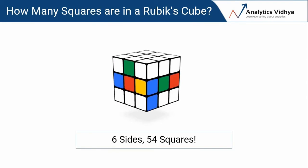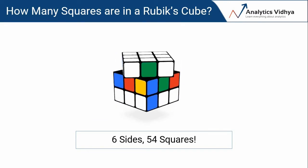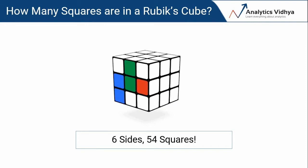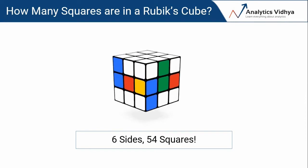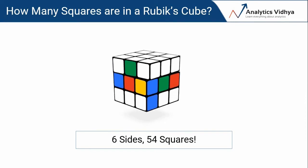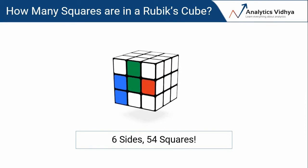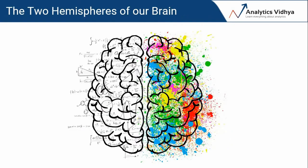A Rubik's cube has six sides with a total of 54 squares. If you figured that out in under 10 seconds without googling it — well done! Most of us, myself included, struggle to do that. It's just the way our brains are wired. Extensive studies have shown how humans struggle with visualizing certain patterns, trends, and even scenarios where angles and shapes are involved.